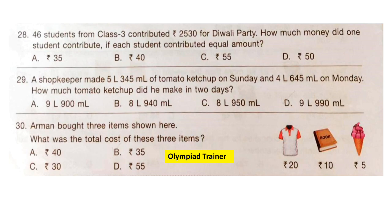Question 29: A shopkeeper made 5 litres 345 millilitres of tomato ketchup on Sunday and 4 litres 645 millilitres on Monday. How much tomato ketchup did he make in 2 days? We add both quantities to get the answer. Option D, 9 litres 990 millilitres, is the correct answer.